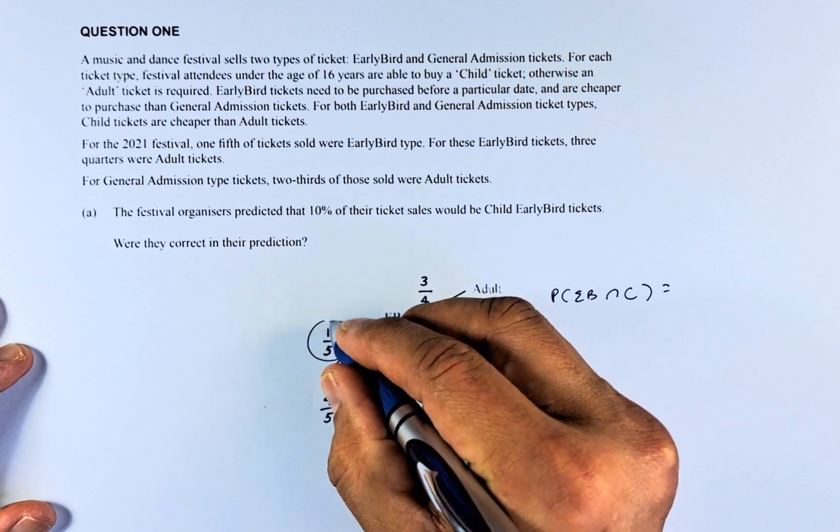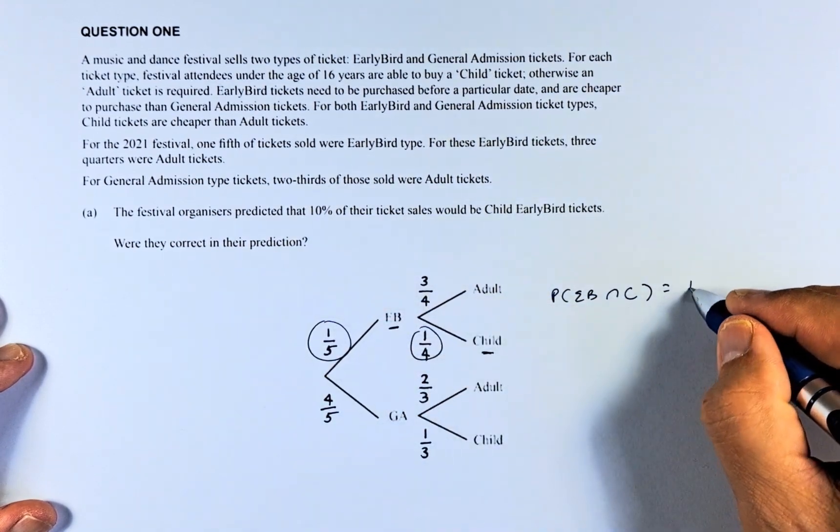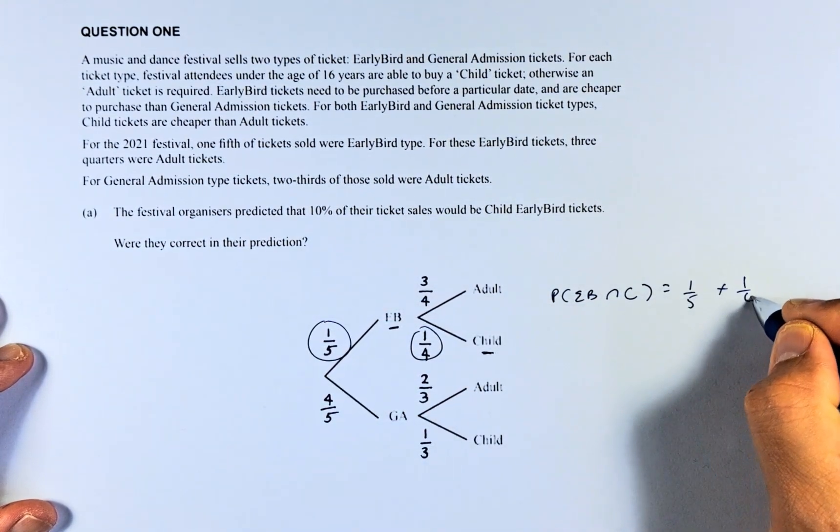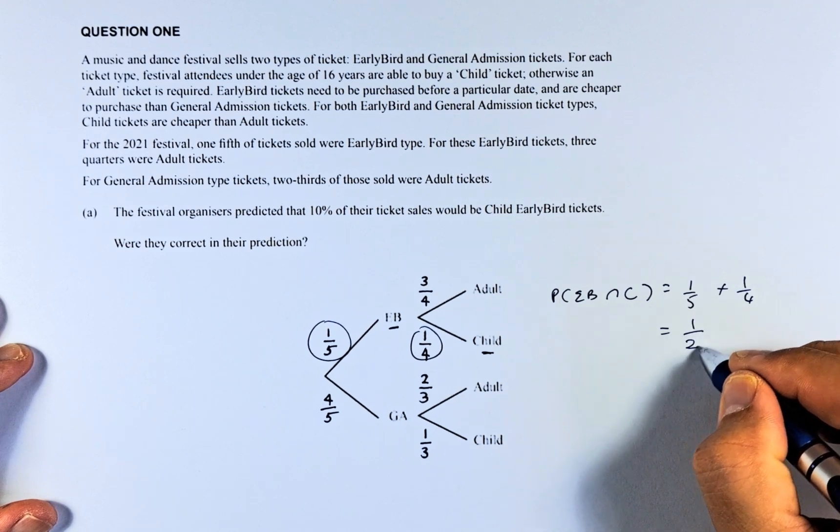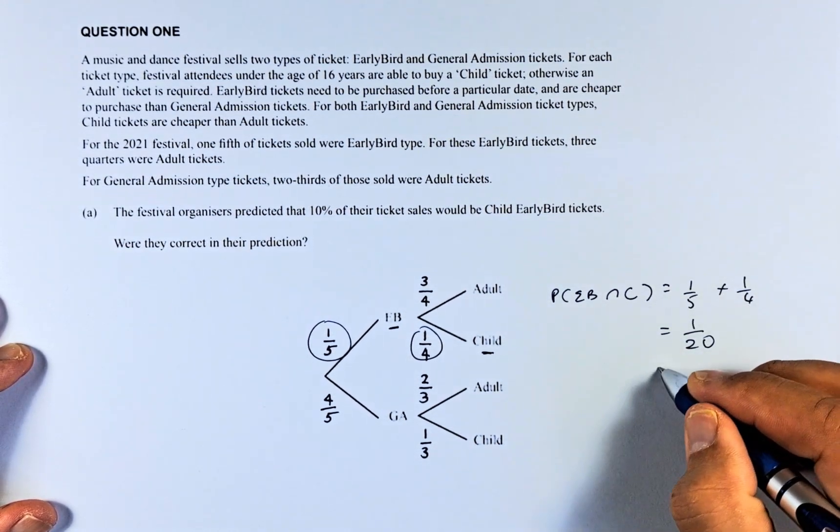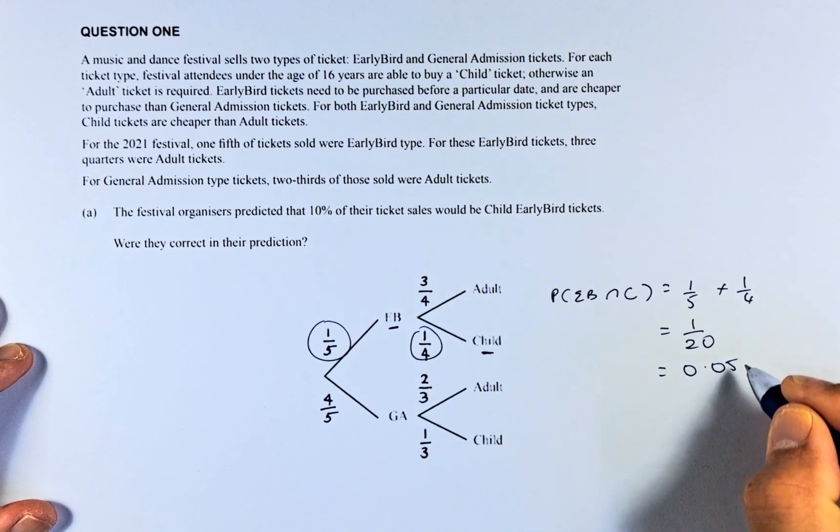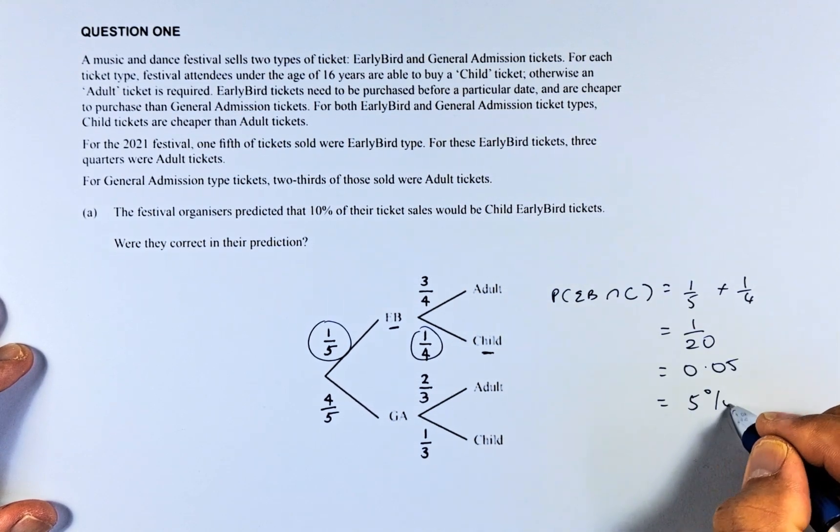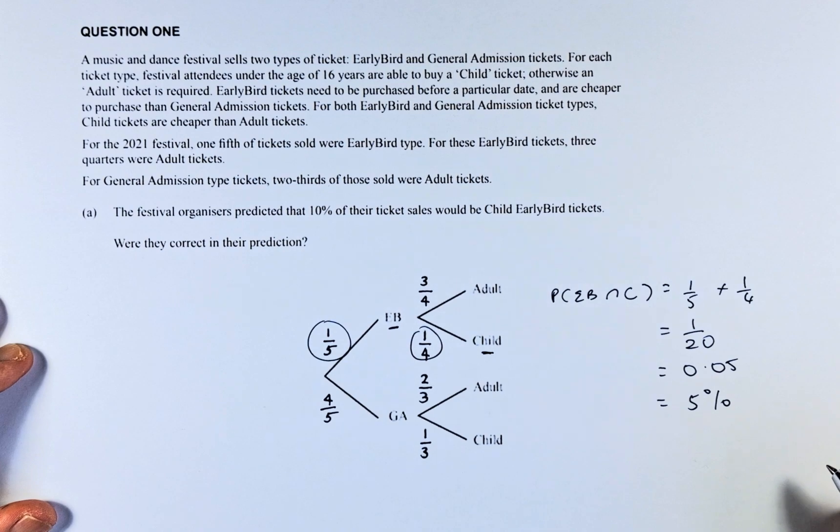One-fifth times one-quarter. One-fifth times one-quarter and that will give us one over twenty. So one times one is one, five times four is twenty. That is the same as 0.05 or five percent if you convert to percentages.